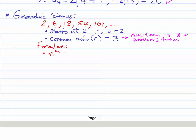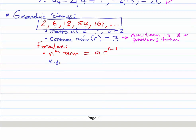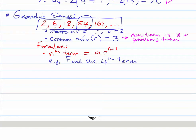Let's look at some formulae for geometric series. The nth term is given by a times r to the power (n minus 1). Let's do an example using this series and find the fourth term. Of course we can see it's 54, but you might be asked to find the 97th term or the 1,356,000th term — and then you'd need the formula rather than multiplying by 3 repeatedly.